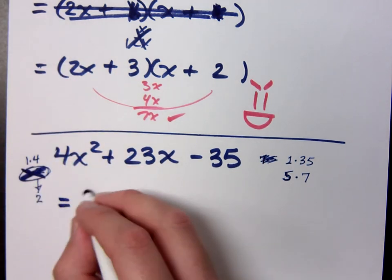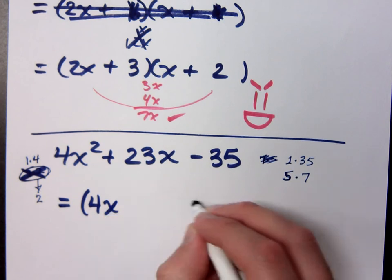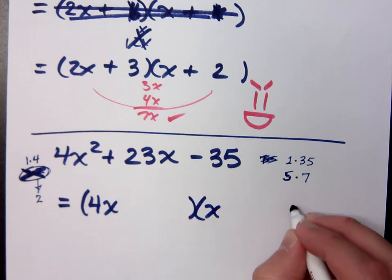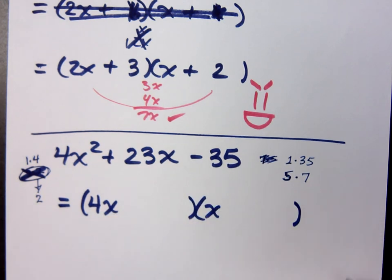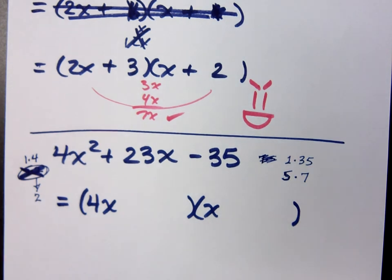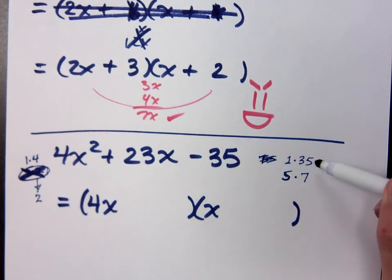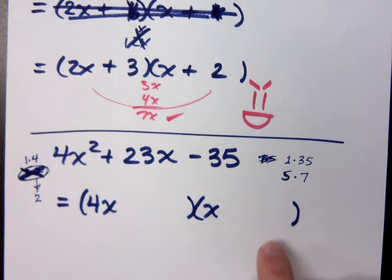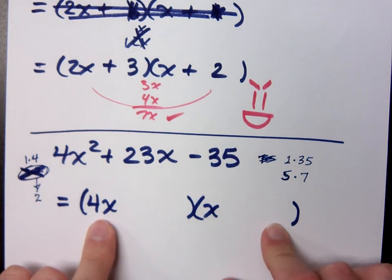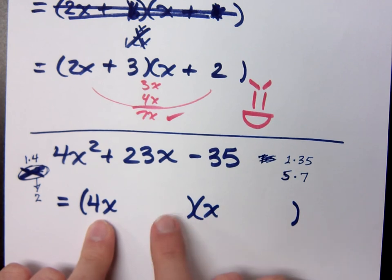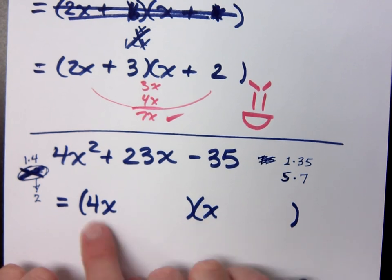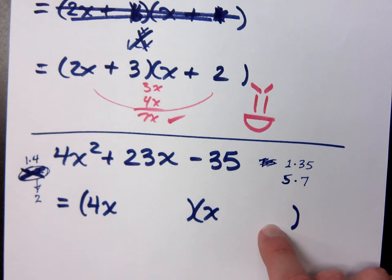So when I factor this, I have to use 4x and x. I don't really have a choice. If I try to use 2 and 2, I will end up with a contradiction — guaranteed. Now over here I've got 1 and 35 or 5 and 7. If I try to put 35 opposite the 4, 35 times 4 is too big, right? If I put the 35 here, I'm going to get 35 and 4. Does that ever give me 23? It's a bad combination.